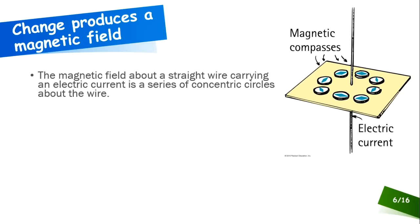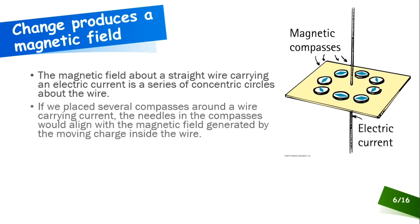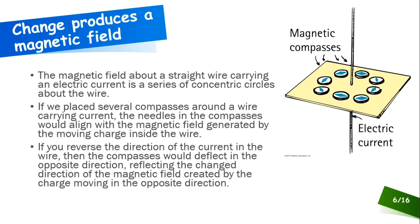The magnetic field about a straight wire carrying electric current is just a series of concentric circles about the wire. So if we take several compasses and place them, as you see there in the image there on your screen, if we place them around the wire and we put an electric current through the wire, then the needles inside each of the compasses are going to align along the magnetic lines of force in the magnetic field. The magnetic field is generated by the moving charge that's inside the wire. That's what current is. Current is charge in motion. If we reverse the direction of the current, that's going to reverse the direction of the magnetic field, and that's going to flip the needles in the compasses.